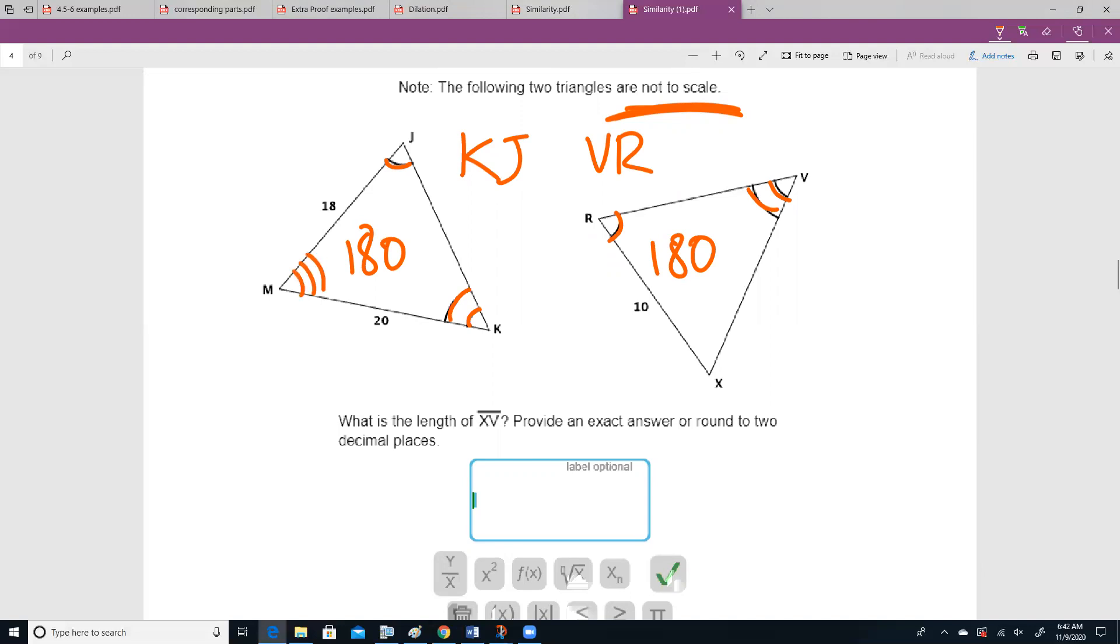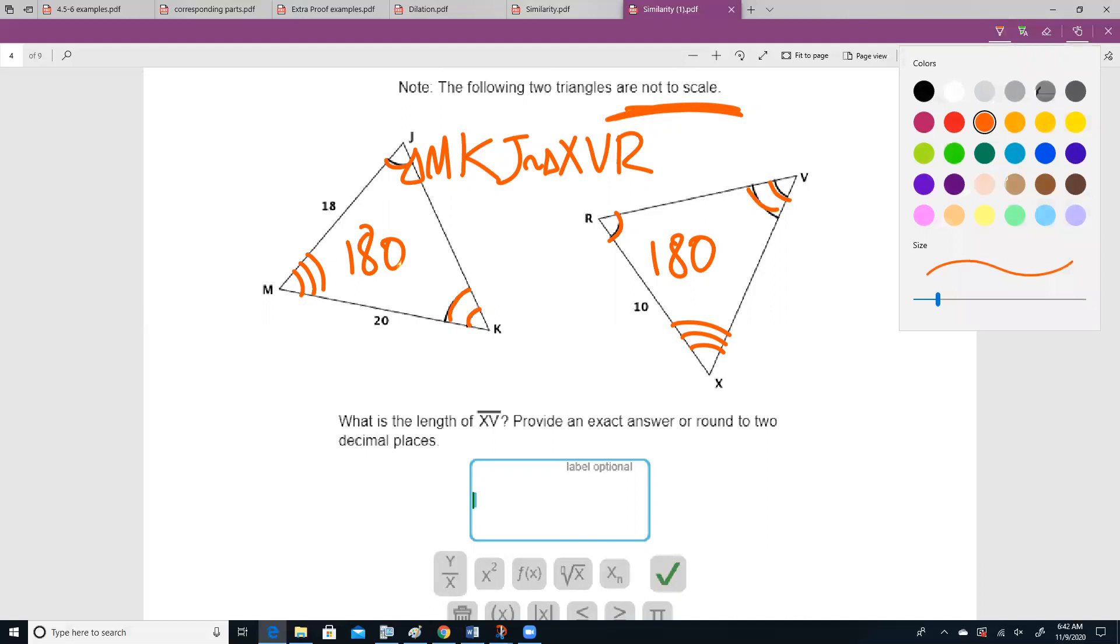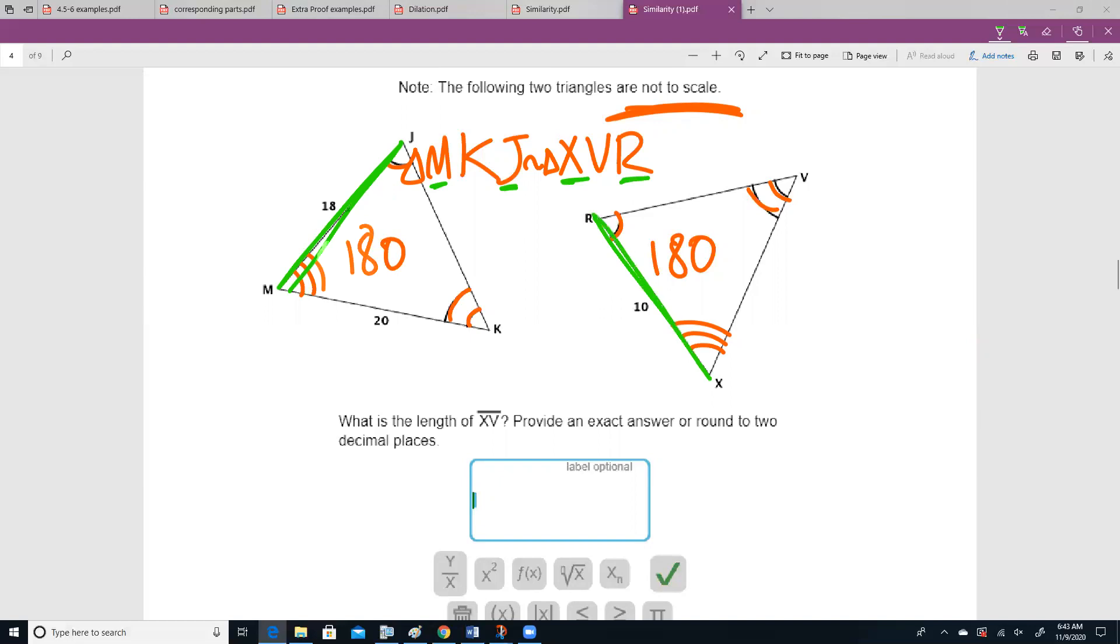Even though it's not marked, we know that m is going to be congruent to x. Because all the angles are congruent, we can say that these triangles are similar. And so we can set up ratios in order to solve. We need to make sure that we are matching up corresponding parts. I see between 1 and 3 from j to m. j and m are the first and last. First and last here are x and r. It means I know that 18 and 10 are going to go together.